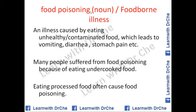Food poisoning — you can also call it foodborne illness. It is an illness caused by eating unhealthy or contaminated food, which leads to vomiting, diarrhea, and stomach pain. Example: 'Many people suffer from food poisoning because of eating undercooked food.' Also: 'Eating processed food often causes food poisoning.'